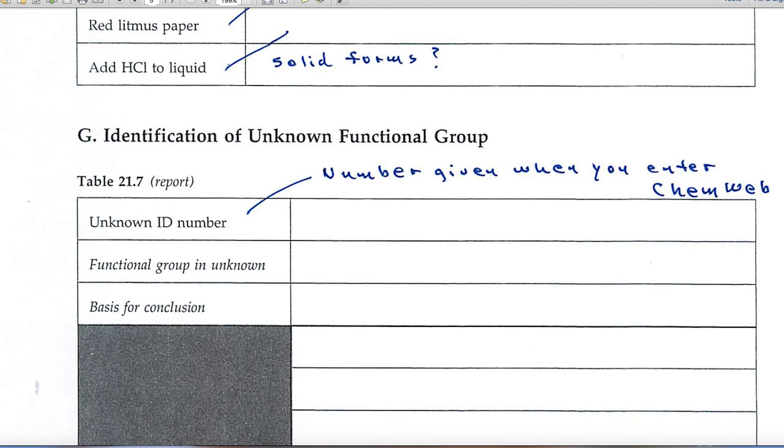Part G is where you'll identify the unknown functional group. And it asks for your unknown ID number. This is the number - when you're online, you enter CHEM at the course site, you enter CHEMweb. And as soon as you enter CHEMweb, it gives you a four-digit number. That's your unknown ID number.